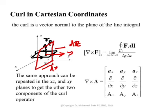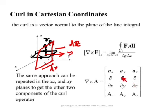If you carry out these expressions for all three tiny differential area elements and look up the proof, the expression for the curl in Cartesian coordinates is obtained as a determinant. The first row contains the unit vectors x̂, ŷ, ẑ; the second row contains ∂/∂x, ∂/∂y, ∂/∂z; the third row contains Ax, Ay, Az. For example, the x-component is ∂Az/∂y − ∂Ay/∂z; the y-component has a negative sign; and so on.